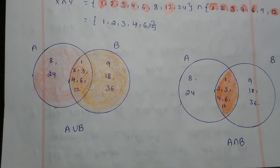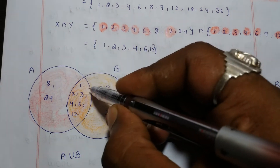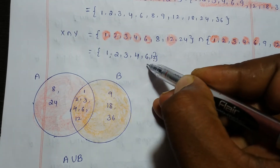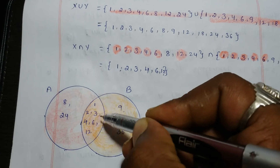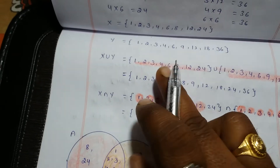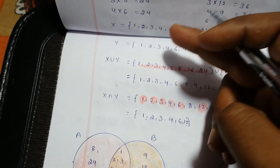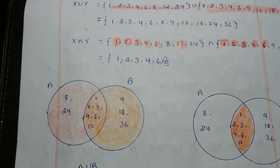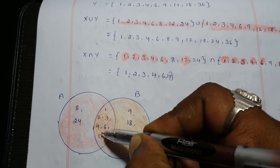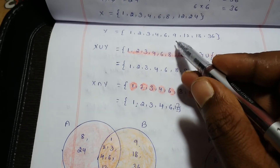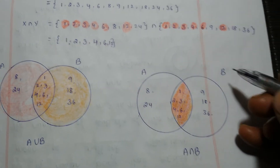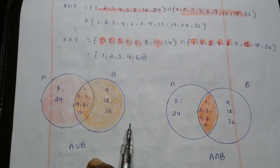Now draw the Venn diagram. In the intersection region, write the common elements: {1, 2, 3, 4, 6, 12}. In the left region of X, write the remaining elements of X: {8, 24}. In the right region of Y, write the remaining elements of Y: {9, 18, 36}. For X union Y, shade both circles. For X intersection Y, shade only the middle overlapping part.